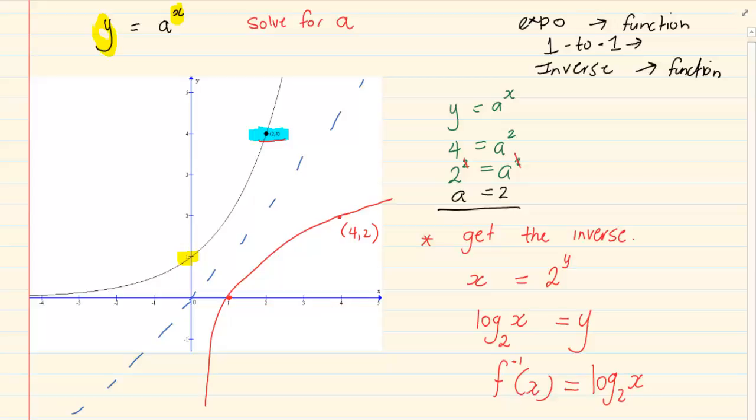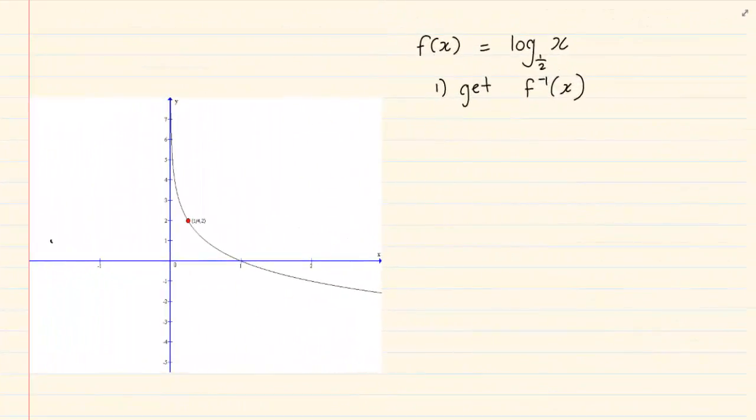Now what they have started doing, is they now no longer give you just the exponents as the original question. Look at what they have done now. Now they have said f of x is equal to log base half x. Get the inverse. Now you know the inverse of an exponent is a log. Likewise the inverse of a log is an exponent. So how do we do this?